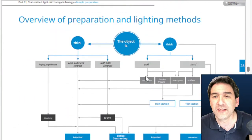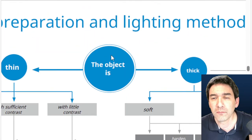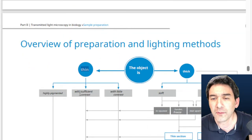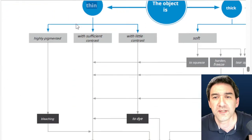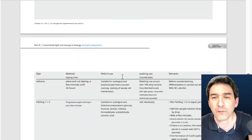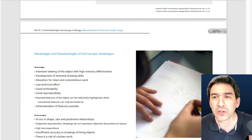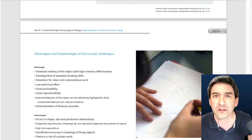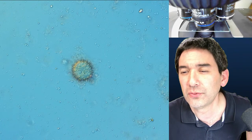One of the most useful graphs in this resource is the sample preparation flowchart — how do you prepare an object if it's thin or thick? What are the steps you should follow? For example, if it's thin and highly pigmented, you have to bleach it. The flowchart is quite useful, as is the overview of important dyes that you can use. I've put the link to the original in the description below.